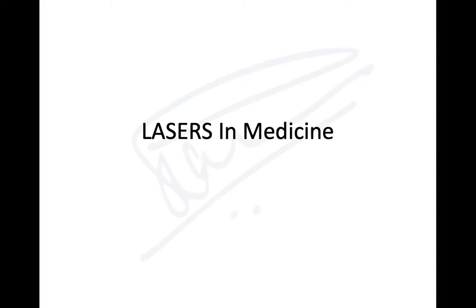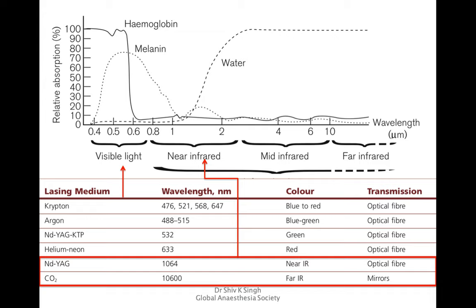Looking at lasers used in medicine, there are lasers in the visible light range: krypton, argon, neodymium YAG KTP, and helium-neon lasers. Their wavelengths range from about 400 to 700 nanometers. Because they fall in the visible range, they can be transmitted via optical fibers. Krypton is blue to red, argon is blue-green, neodymium YAG KTP lasers are green, and helium-neon lasers are red.